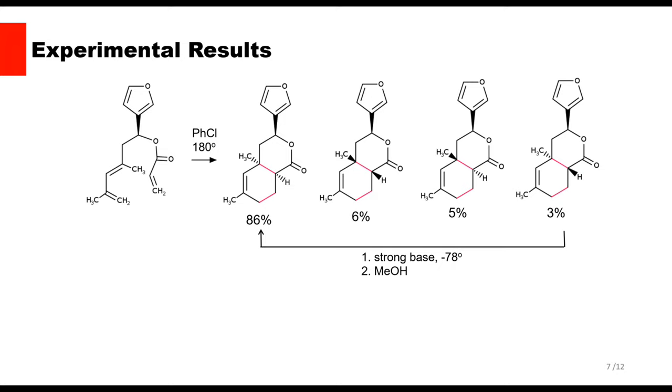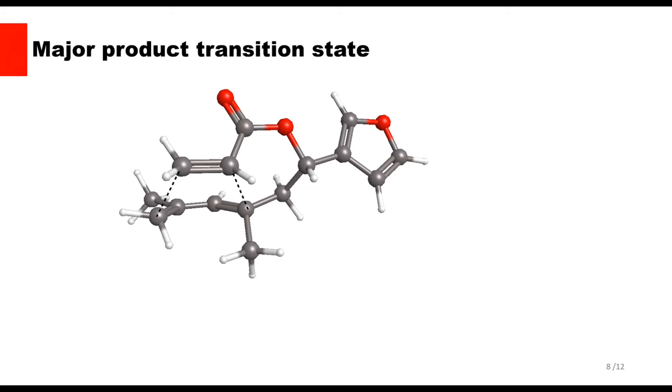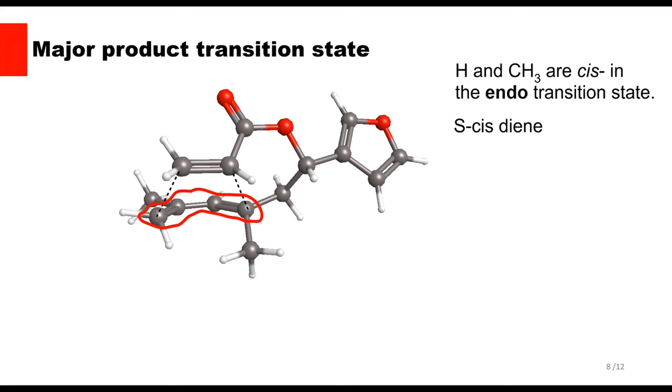Why is the major Diels-Alder product cis-fused? This slide shows a reactant pose that approximates this transition state. Five things are evident. First, this mode of reaction puts the 8A hydrogen cis to the 4A methyl on the newly formed ring. Second, as in all Diels-Alder reactions, the diene must be in the S-cis conformation.